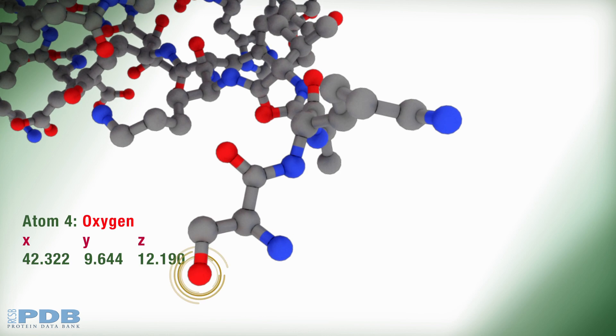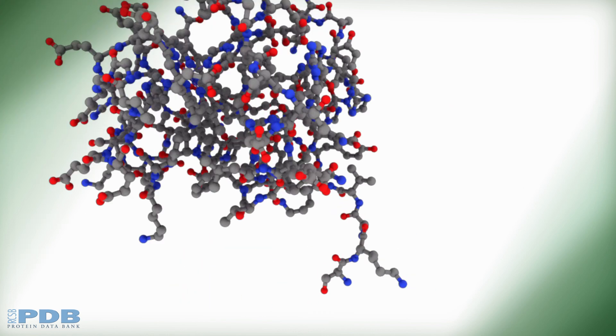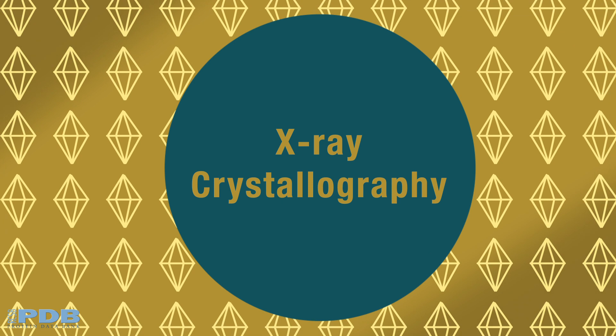How did the scientists see the atoms? Back in the 1970s, the sole method to do so was X-ray crystallography.